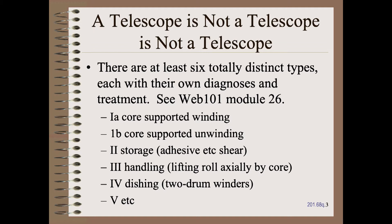Just as we learned in our award-winning Web 101 class, that a wrinkle is not a wrinkle is not a wrinkle — there are about 20 different kinds — the same is true of telescopes. There are at least six totally distinct types, each with their own diagnostics and treatment. We cover those in great detail in module 26 of Web 101.